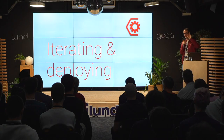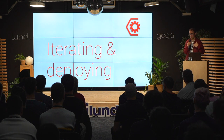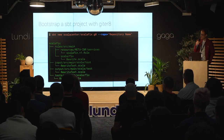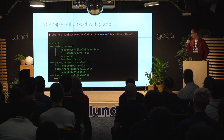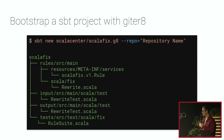That's the API: you traverse your tree, pick up relevant elements, and generate patches. Now, how do you actually write rules? To get started, there's a Giter8 template you can invoke, which creates a simple structure with all the key elements needed to write a rule.